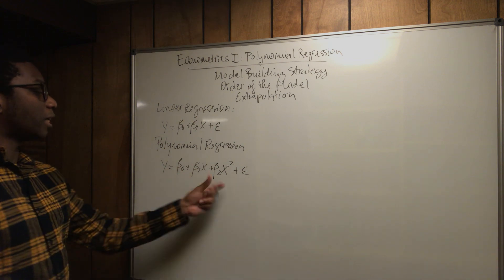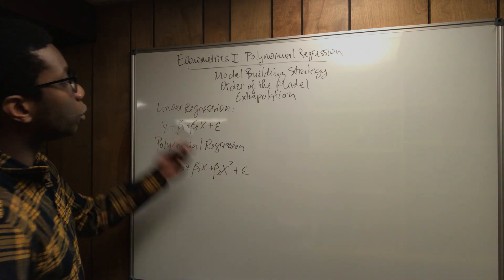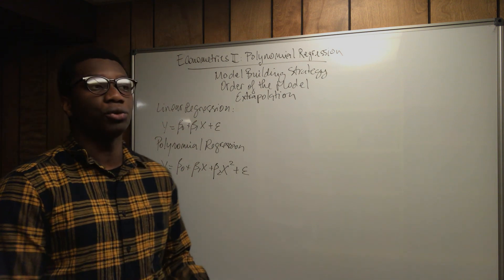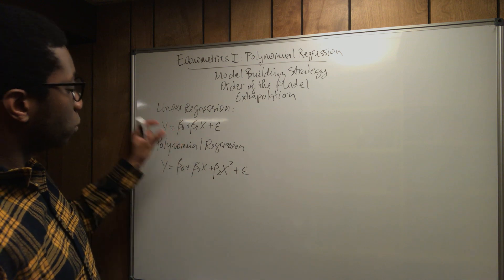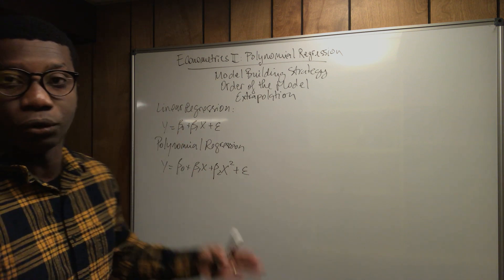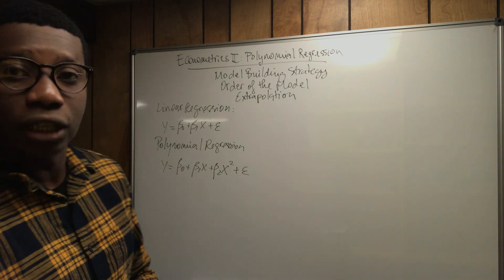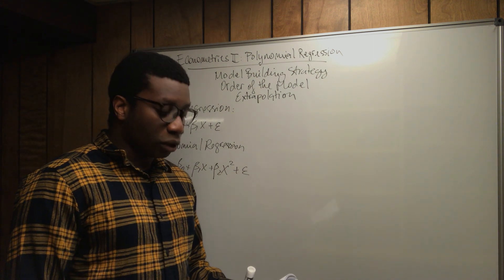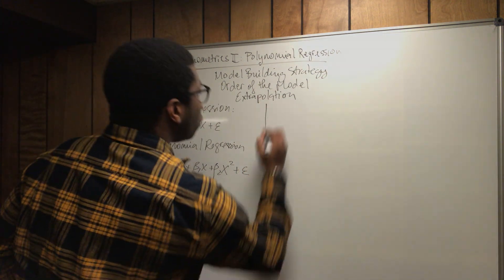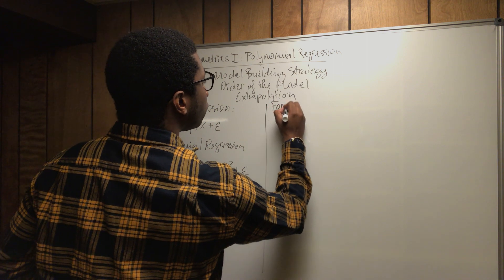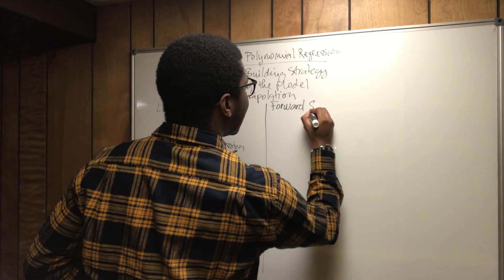So today we're going to talk about the model building strategy — how do you decide how to fit the polynomial regression. There are two approaches. The first is called the forward selection procedure.